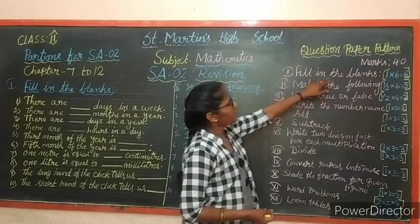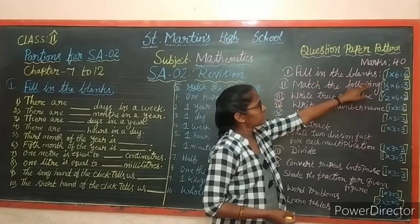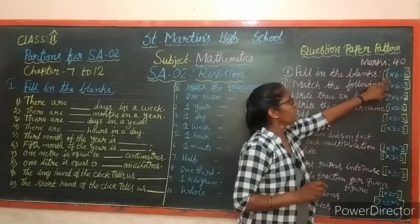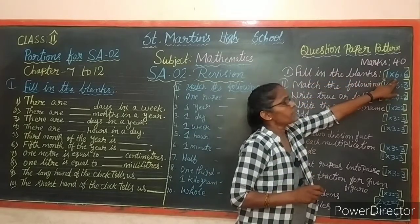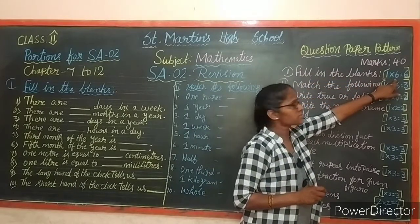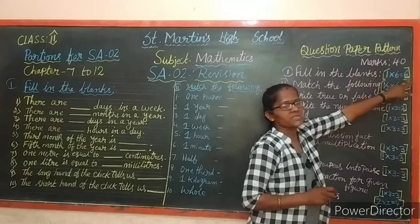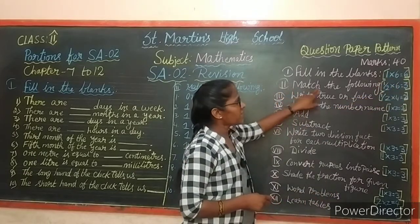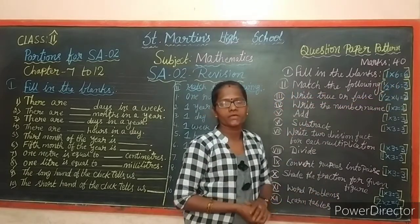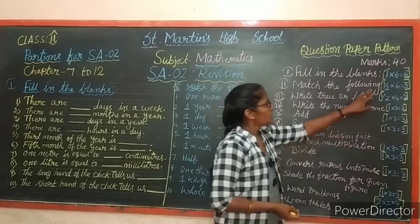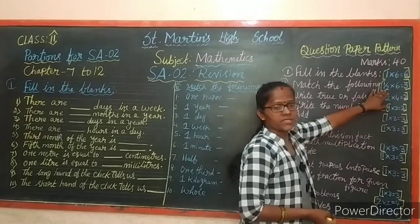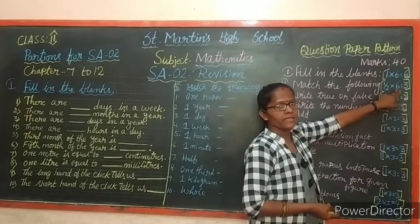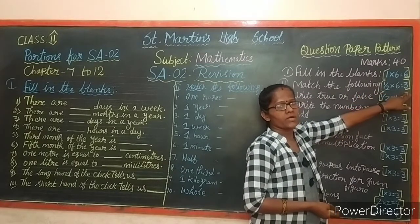This is the paper pattern for 40 marks. First, fill in the blanks - each carries 1 mark, there will be 6 questions, totaling 6 marks. Next, match the following - each carries half a mark, 6 questions totaling 3 marks.